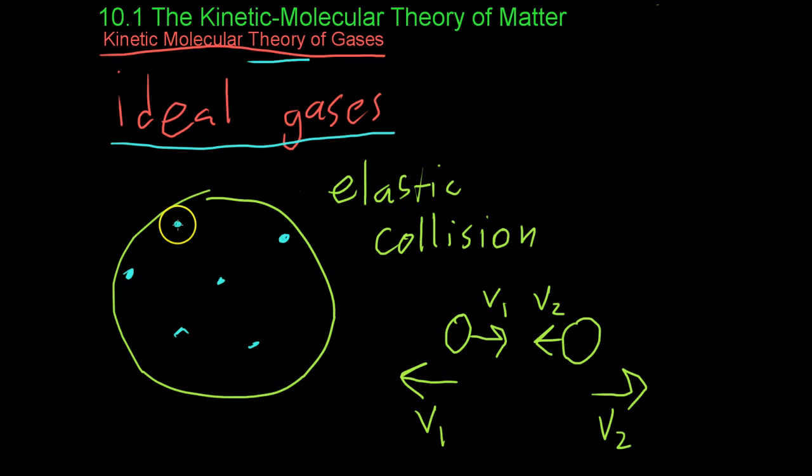Thirdly, we assume that these gases are in constant, random motion. So, any given atom could be moving any given way at any given time. And all these vectors average out so that the gas is, as a whole, not moving.